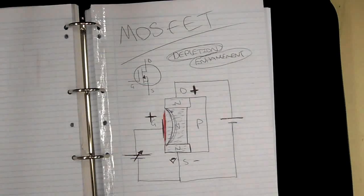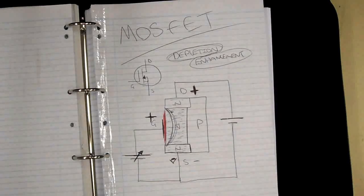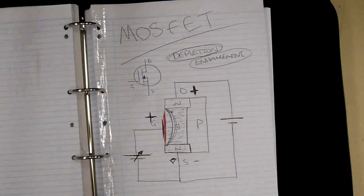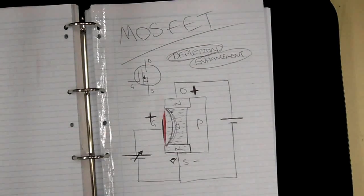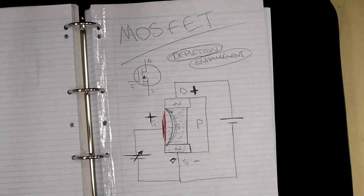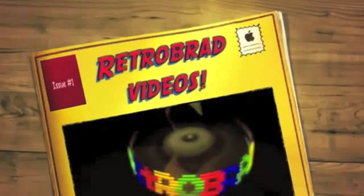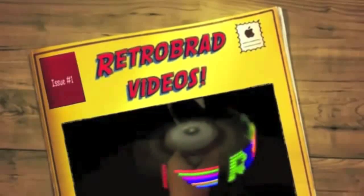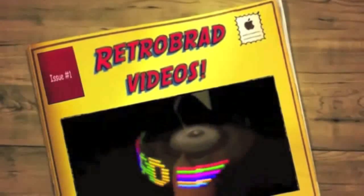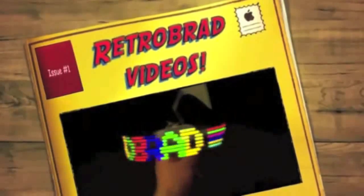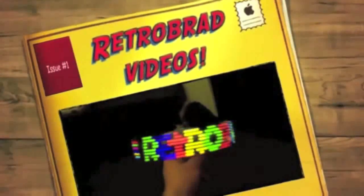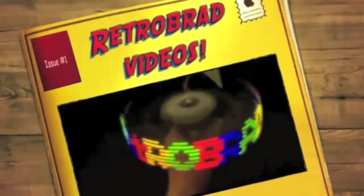That's it for MOSFETs. Later on we'll go into some circuits utilizing MOSFETs, JFETs, BJTs, and diodes. All I'm doing with these introductions is showing you the general gist of the internal workings of such devices. Thank you for watching, and I'll be back again hopefully soon. You've been watching another RetroBrad video — be sure to check out and subscribe to my channel for more electronic projects, hacks, how-to videos, and tutorials. God bless.